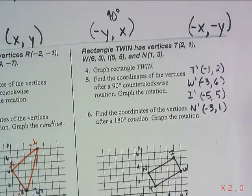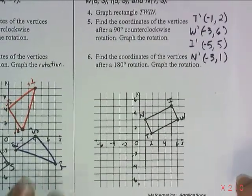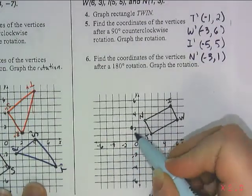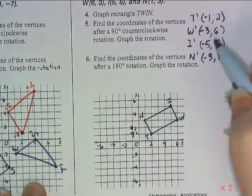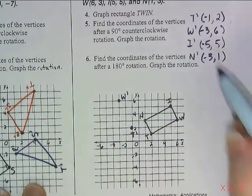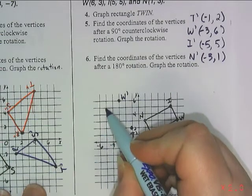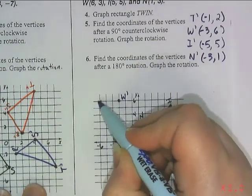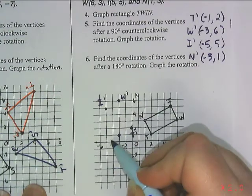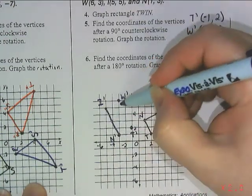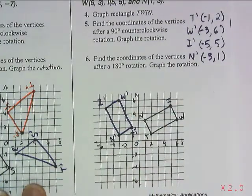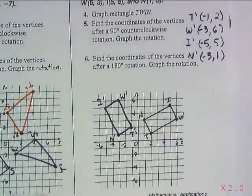And let's take a look. I'm going to move this up here for a second. So negative 1, 2, that is where T prime goes, negative 3, 6, there is W prime, negative 5, 5, I prime, and negative 3, 1, N prime. And I look, that does appear to be a 90-degree rotation, and it has gone counterclockwise.